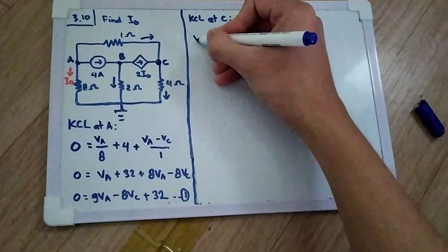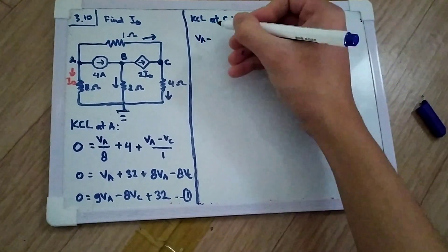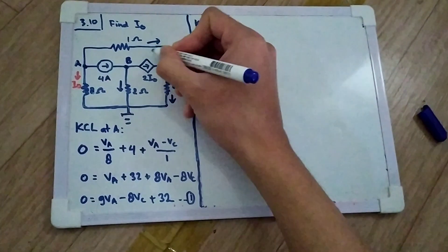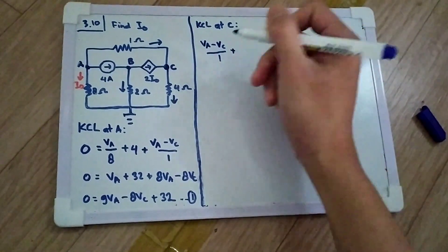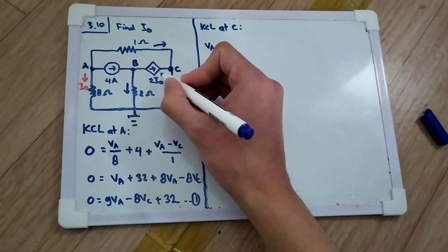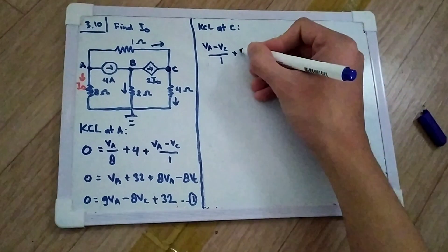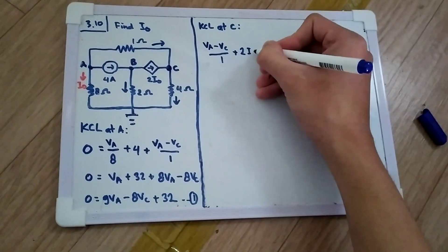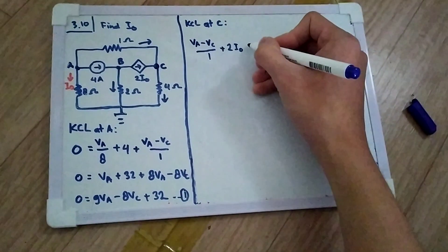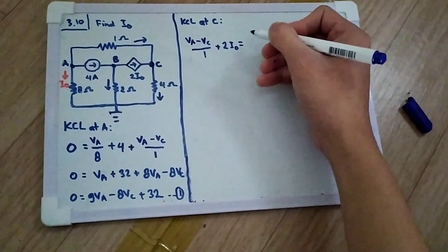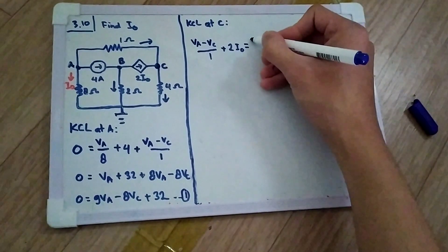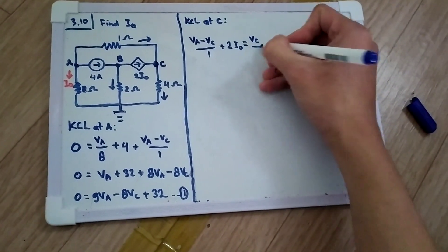The currents going in come from two branches. We have VA minus VC over one, which is that branch current, plus the current source two·I0. That equals VC divided by four, which is the current going out through the resistor.